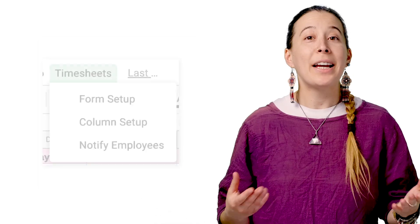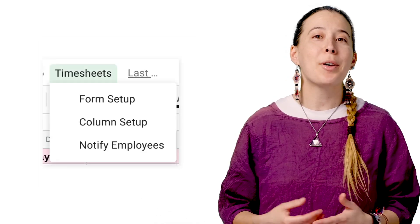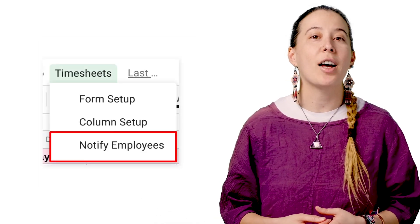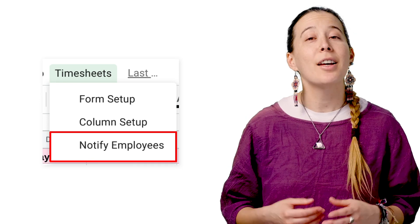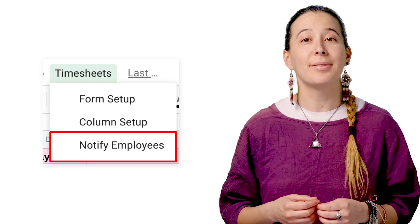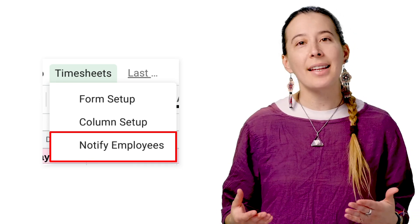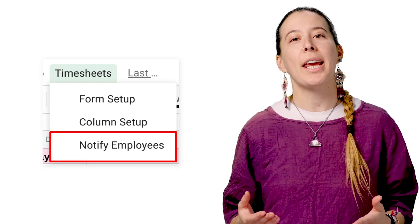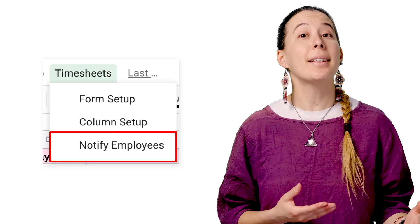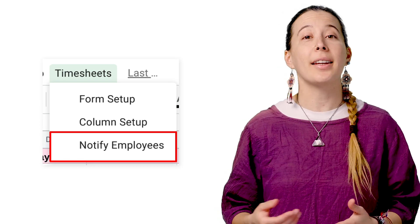And finally, to send emails out to employees, click on Timesheets Notify. After a bit, you will see the last column changed from Pending to Notified.